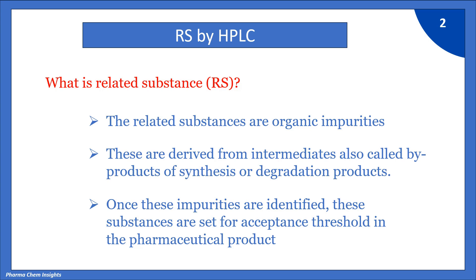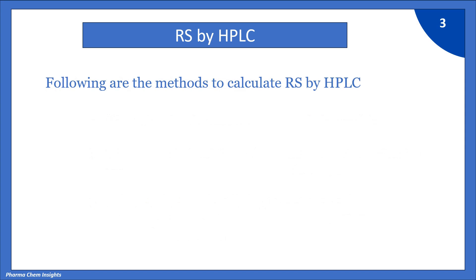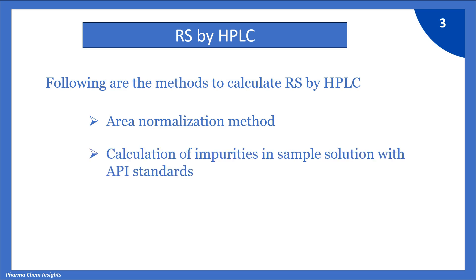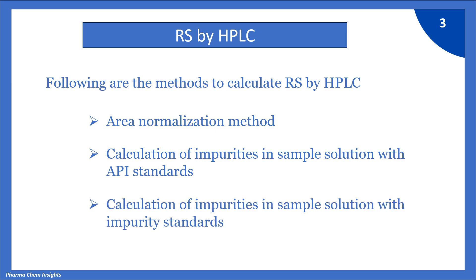In the pharmaceutical product, the following are the methods to calculate related substance (RS) by HPLC. First is the area normalization method. Second is calculation of impurities in sample solution with API standards, where we calculate known and unknown impurities against the API standard. Third is calculation of impurities in sample solution with impurity standards, where we calculate known impurity against the respective known impurity standards.